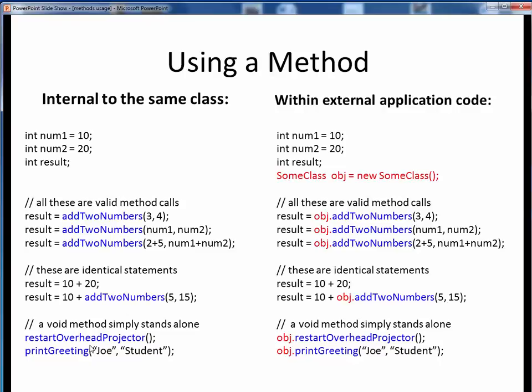Finally, if we're calling a void method, notice that nothing is returned to any left-hand side variable. So we simply call the method by name. Also, if the method furthermore takes no inputs, the parentheses are still there but they're empty. And here's another method which takes two string inputs but returns no value. These are both void methods.